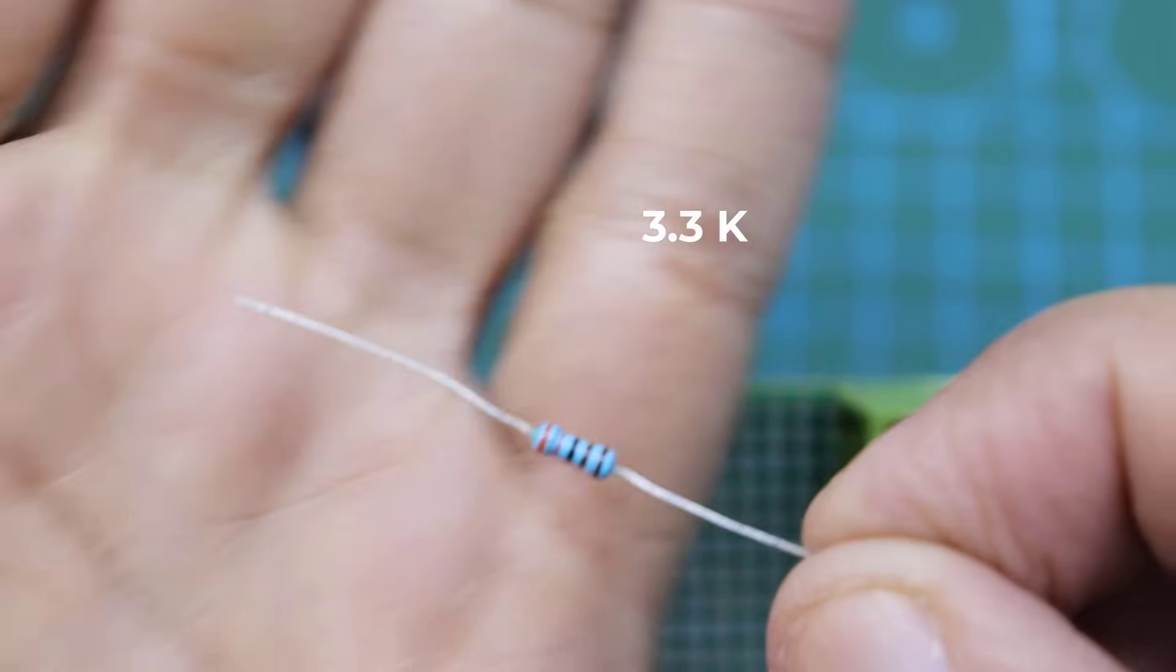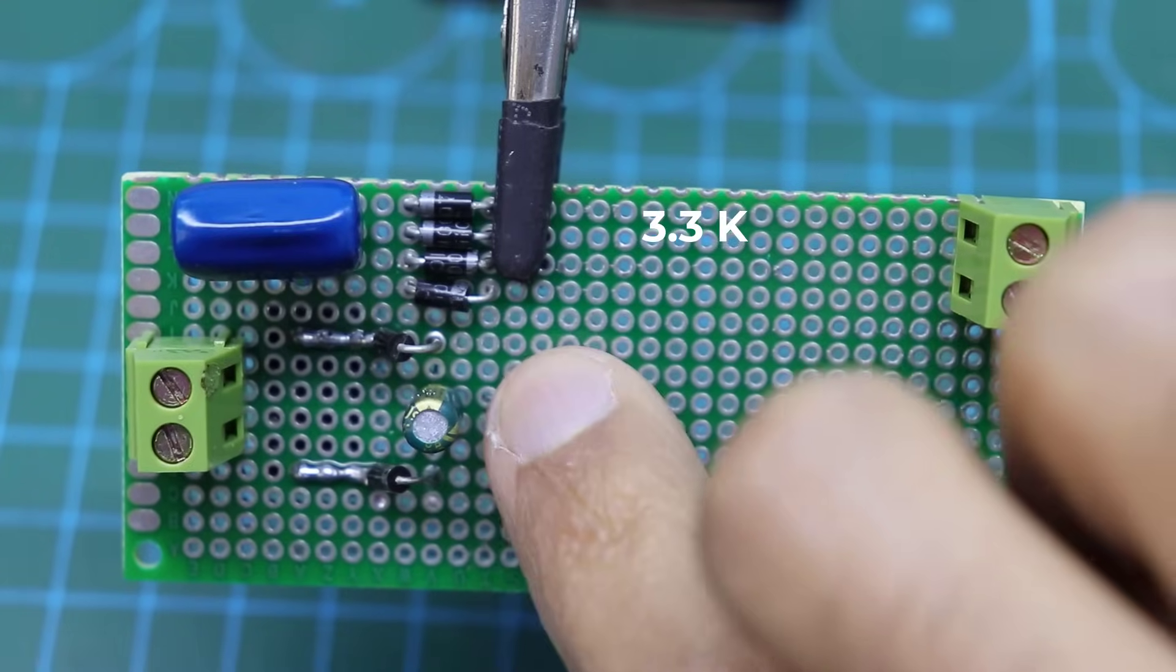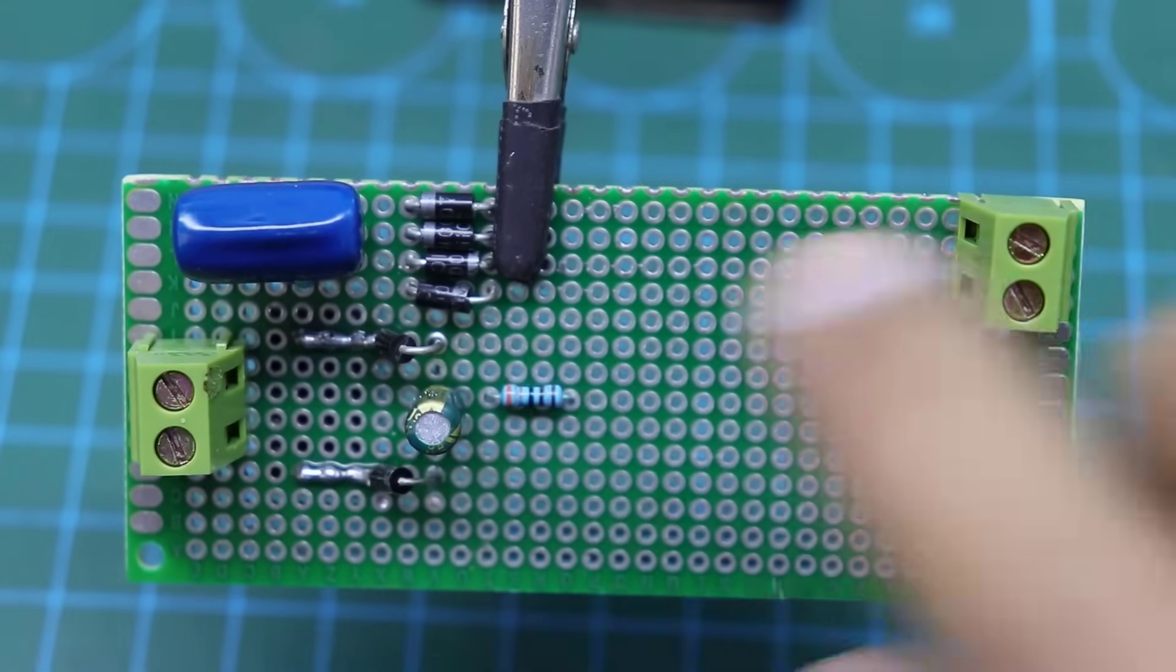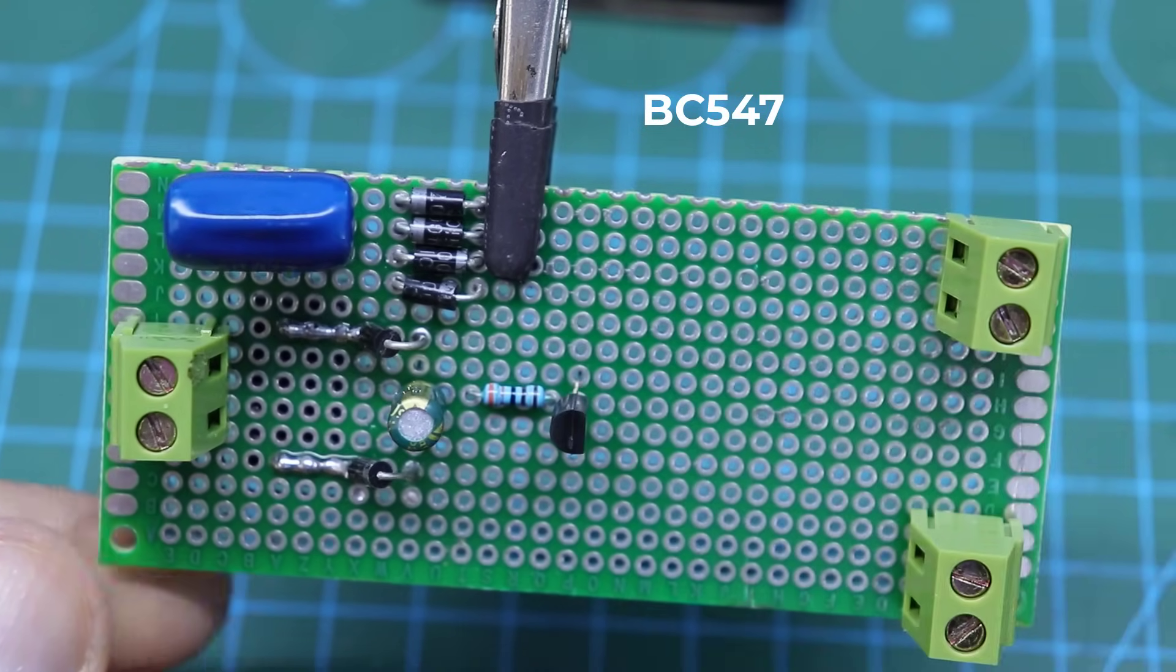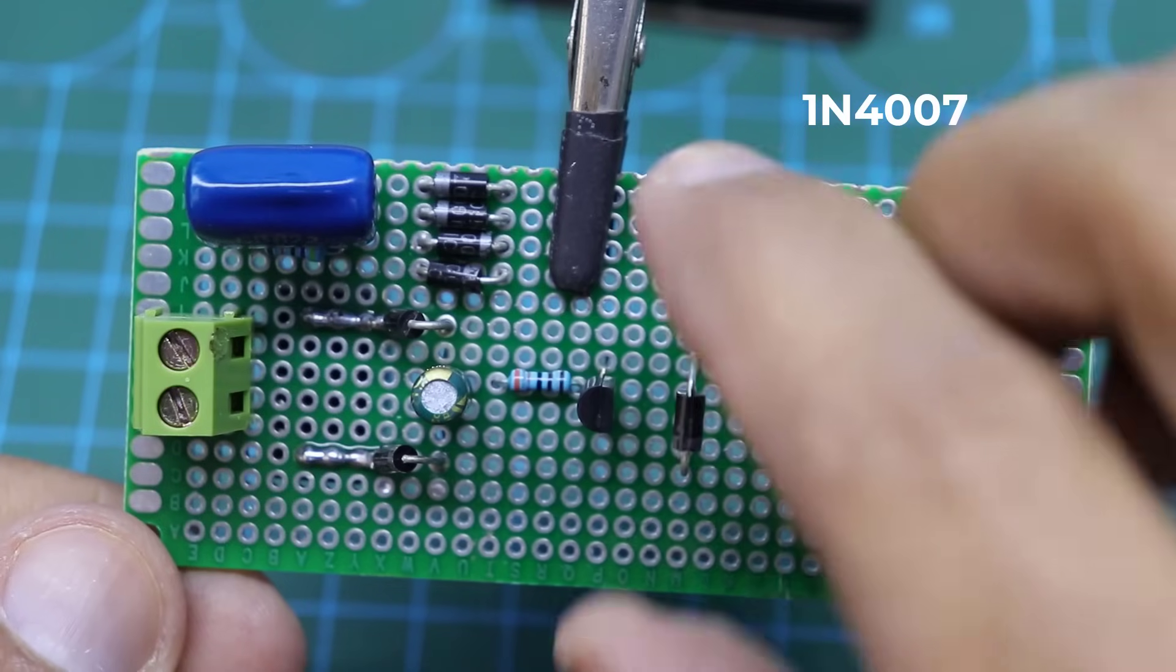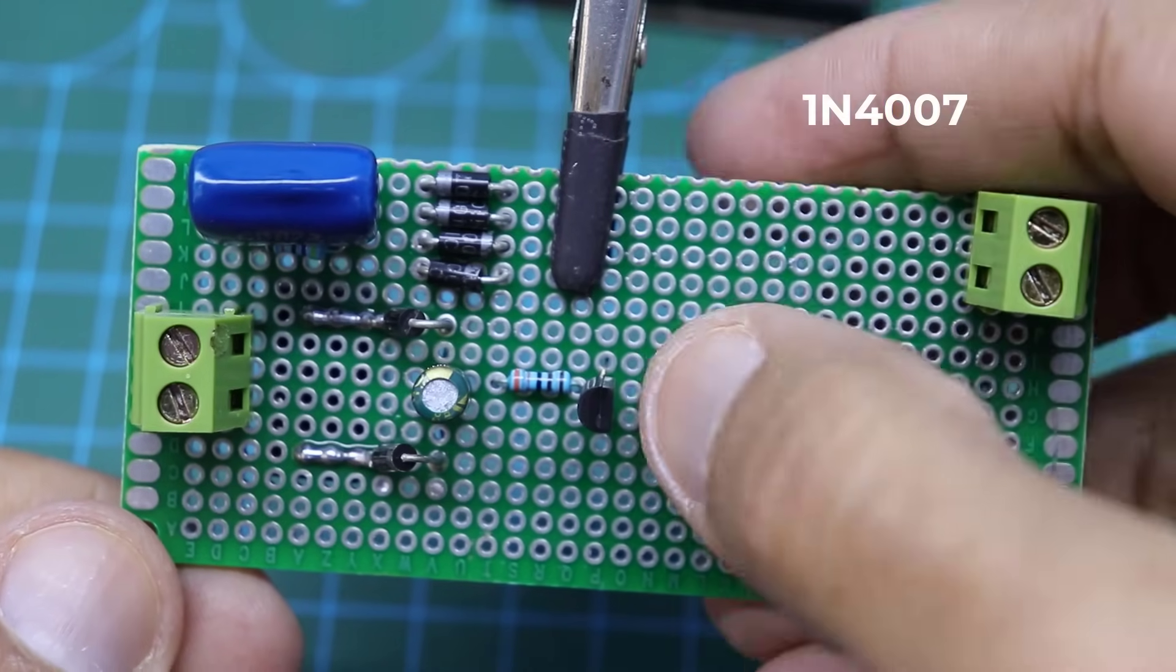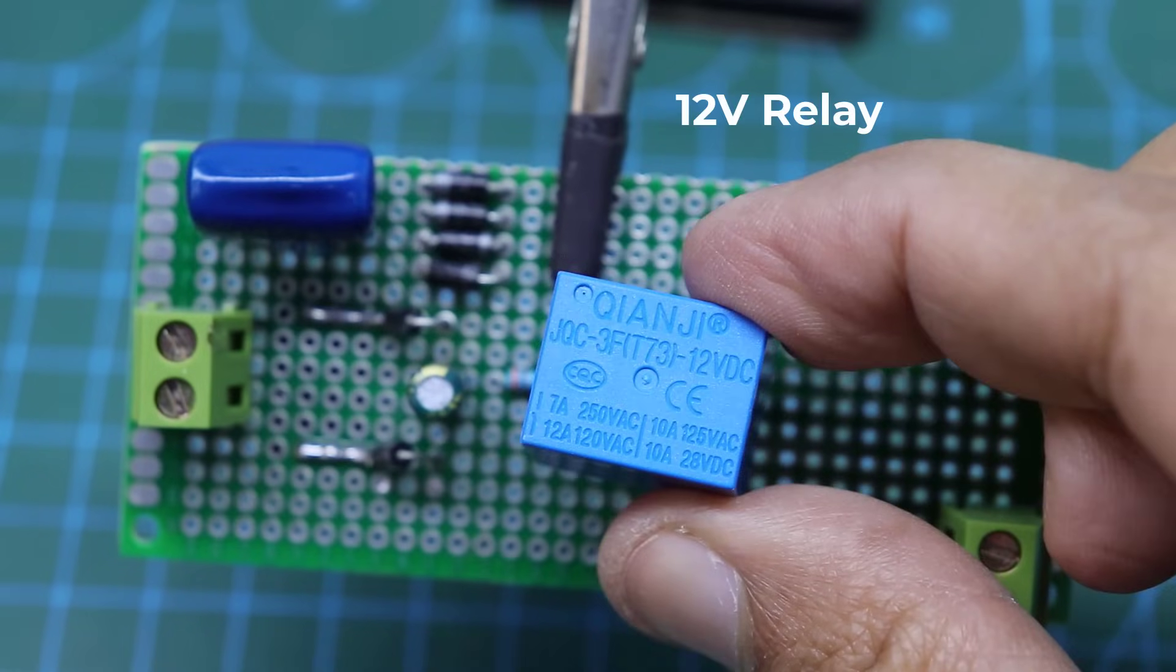Resistor 3.3 Kilo. Transistor BC547. Diode 1N4007. Relay 12 Volt.